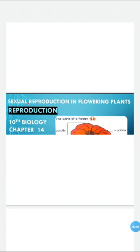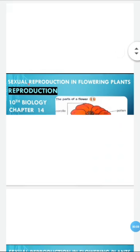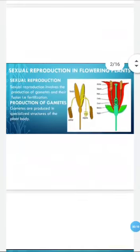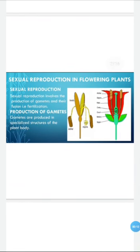Assalamu alaikum students. Today we are going to discuss sexual reproduction in flowering plants. Sexual reproduction basically involves the production of gametes - gametogenesis - and their fusion, which is known as fertilization.